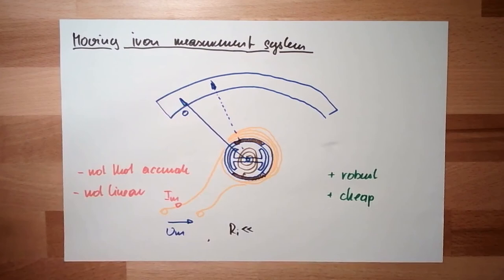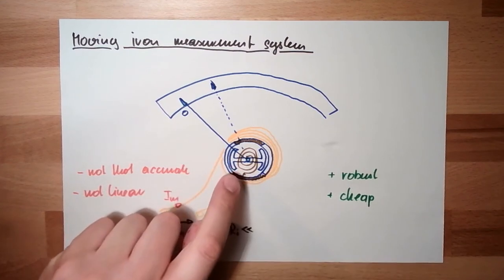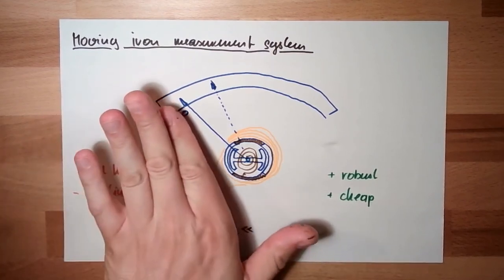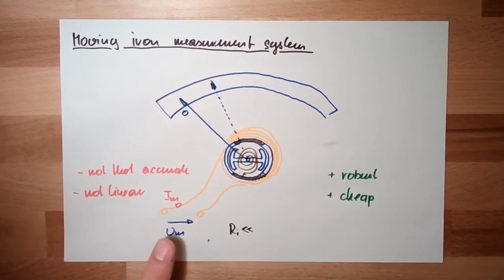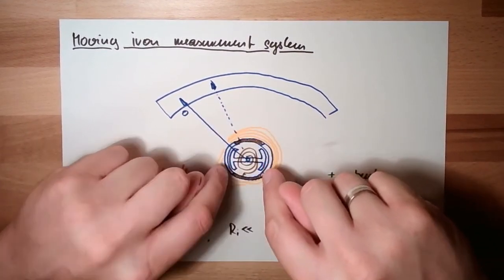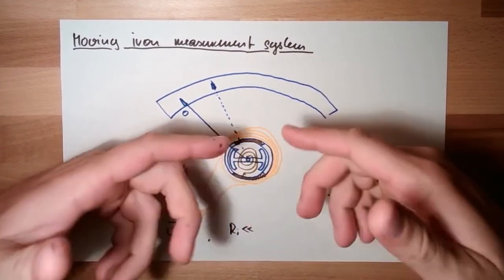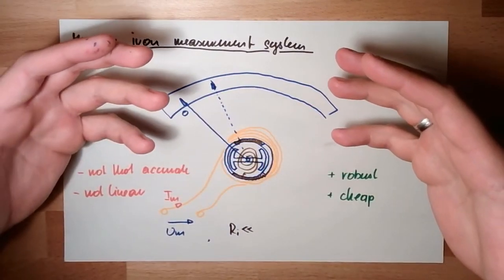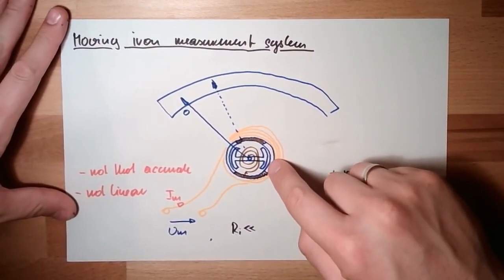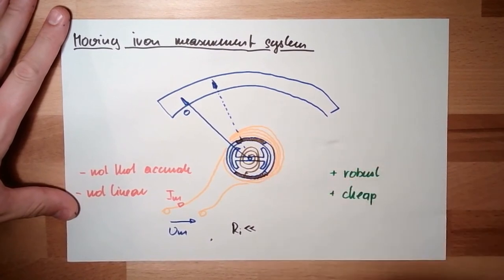Also one interesting thing. If this is not DC but AC, alternating current, this is working as well. Since this movement is I-squared, if it's alternating, the magnetic fields are also alternating. But it does not really matter if north and north pole are repelling each other, or south and south pole are repelling each other. The main thing is they should repel each other. And this is done also with AC.